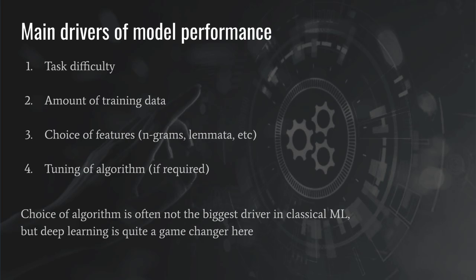Finally, there's the choice of algorithm, the tuning of the algorithm, and the setting of the hyperparameters. A lot of discussion in the literature is about this fourth part — which algorithm to pick, how to tune it, which hyperparameters to choose. But what you find is that this is actually not the most important part. The most important drivers of performance are task difficulty and amount of training data. The choice of features comes next, and the choice of algorithm is actually the least important driver of model performance. Much more important is to have enough training data and to choose your features correctly.